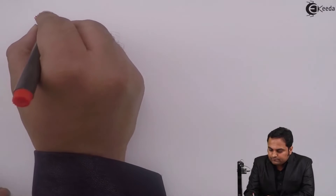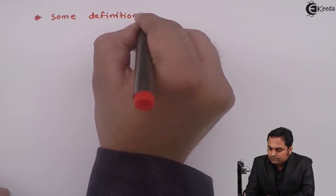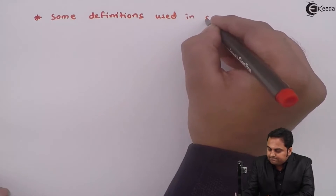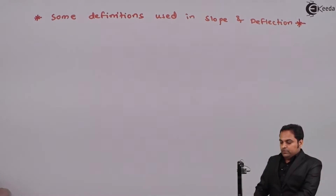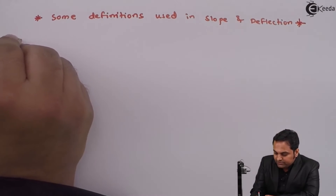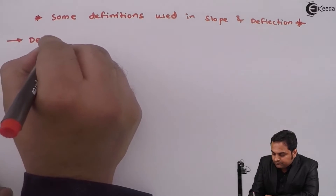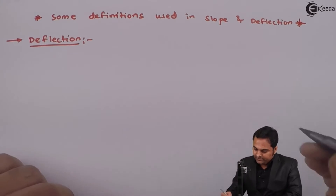Hello friends, here in this video we will see some definitions which are used in the chapter of slope and deflection. The first definition is deflection, and to explain that I will draw the diagram.